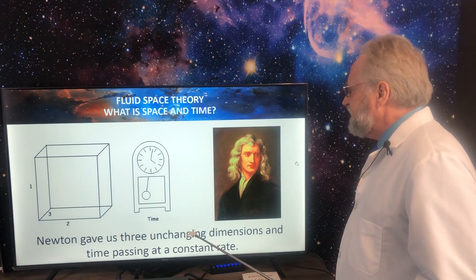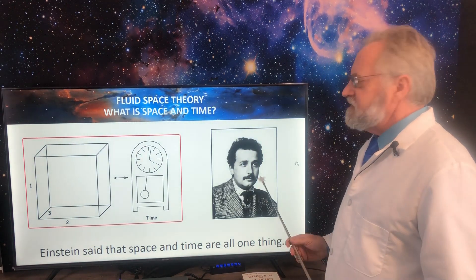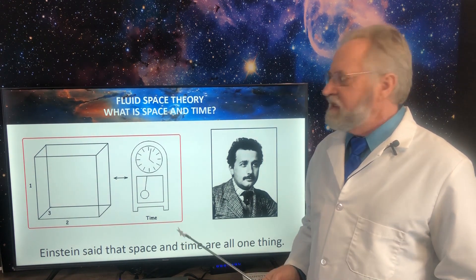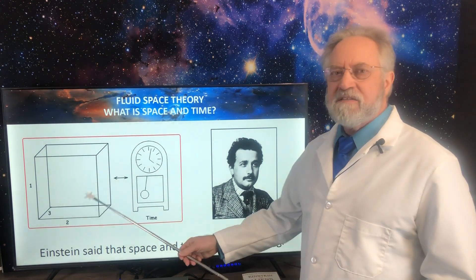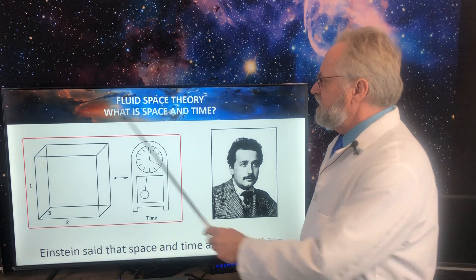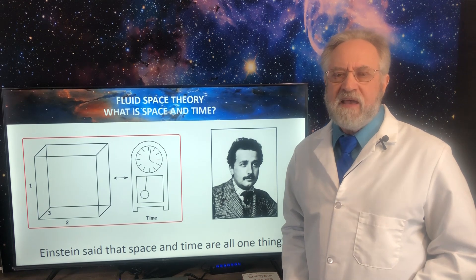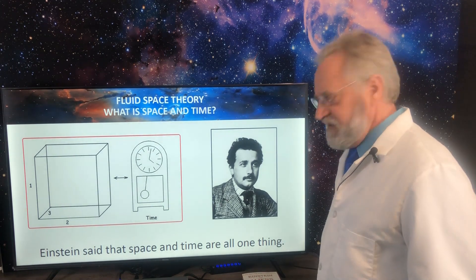But in 1905, Albert Einstein came along and said, no, Newton was wrong. Space and time are not separate things. They're actually all one in the same thing. So why did Einstein come up with that and why did everyone believe him?